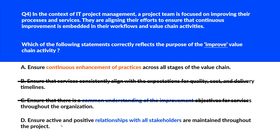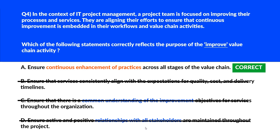Option D says ensure active and positive relationships with all stakeholders are maintained throughout the project. This is about stakeholder management, which falls under other value chain activities such as 'engage' or 'deliver.' We'll reject this and lock option A as the right answer.